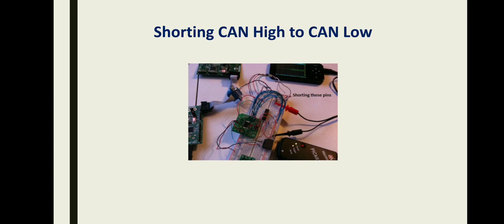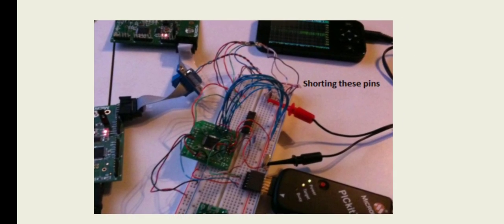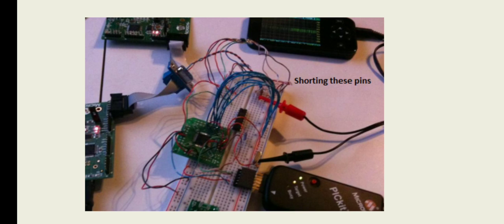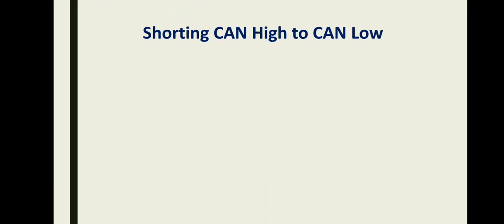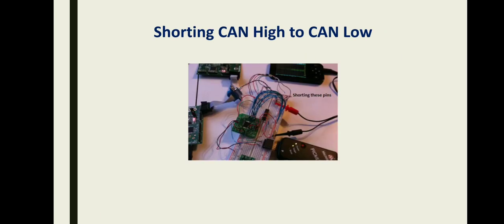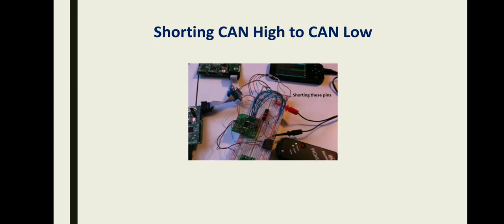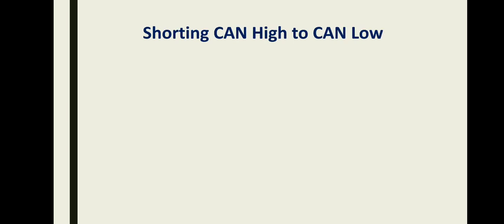Let's see short CAN high to CAN low. Here we have the CAN protocol with two wires. If we short these two wires, the bus off condition will occur. This is a pictorial representation. We know the CAN has two lines — high and low. If the two lines get shorted, the data transferring in both lines starts to overlap or collapse, and the data may corrupt.